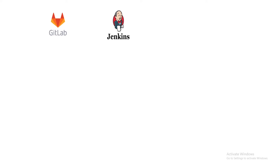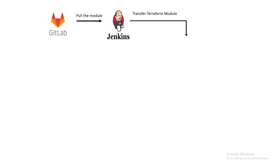Let's explore the workflow of 3-Tier Application Provisioning in GCP using Terraform, stage by stage. In the first stage, Jenkins' job will pull the GCP 3-Tier Application Provisioning Terraform module from GitLab. In the next stage, Jenkins will transfer the Terraform module to the Terraform server.